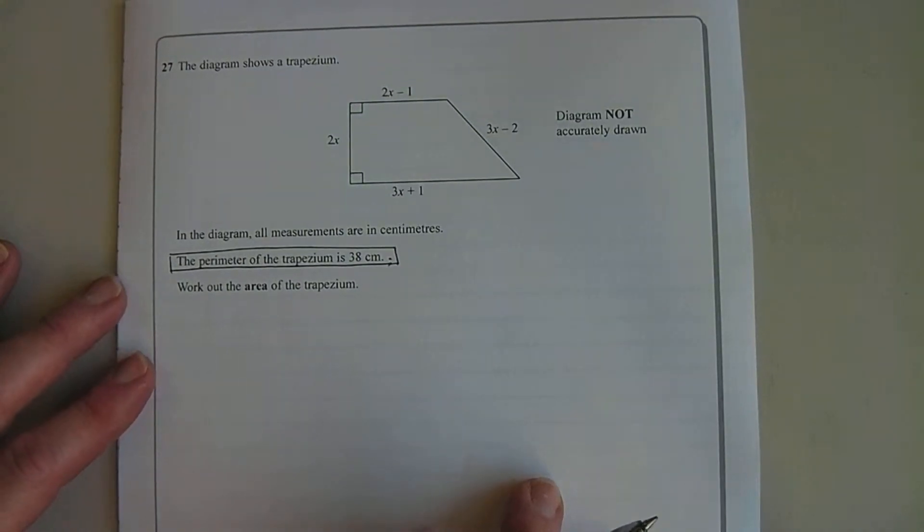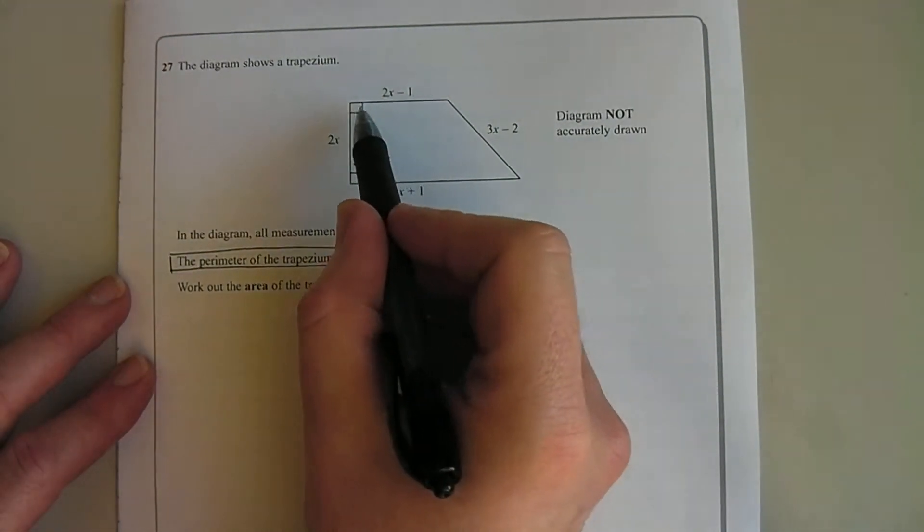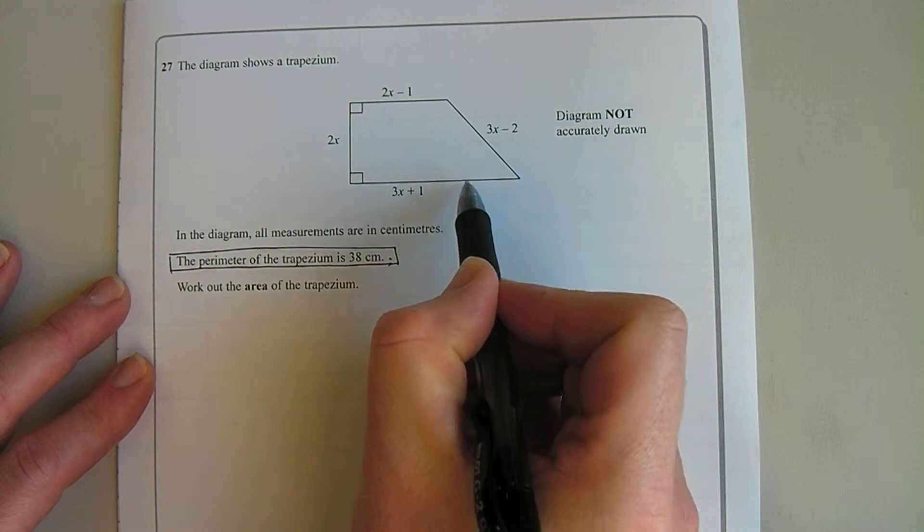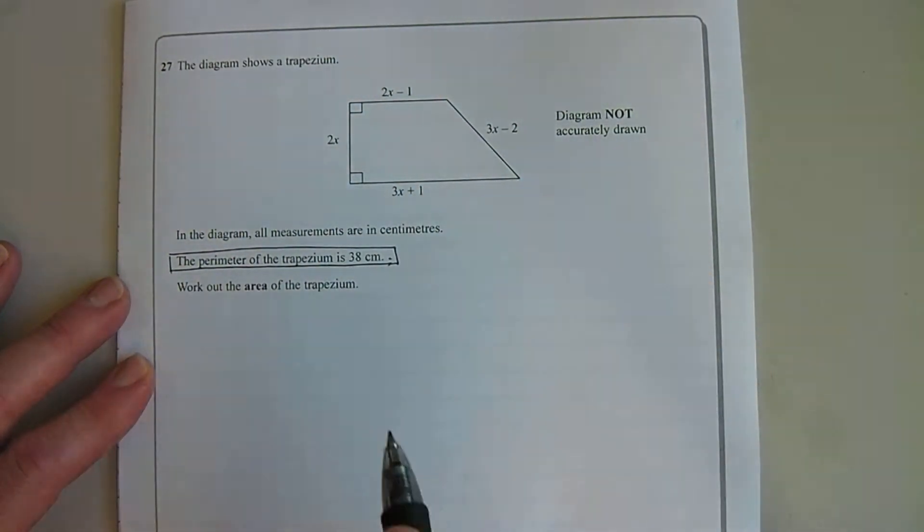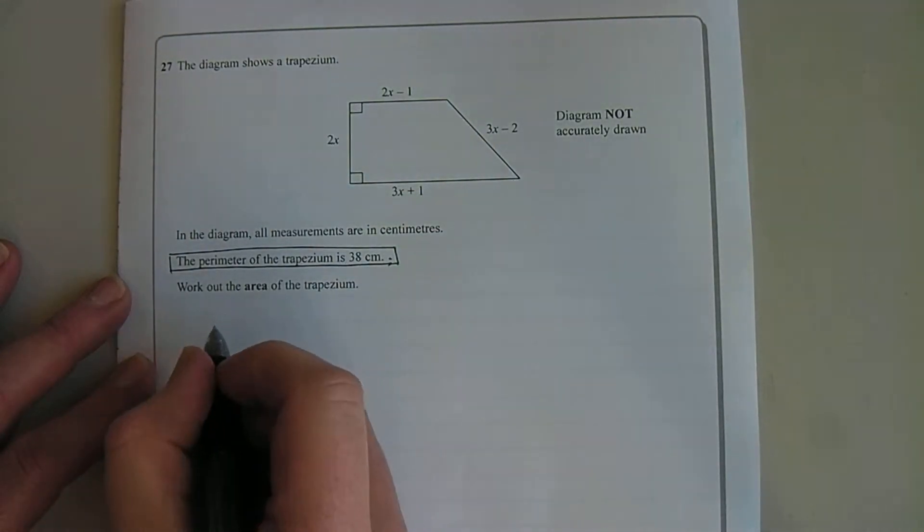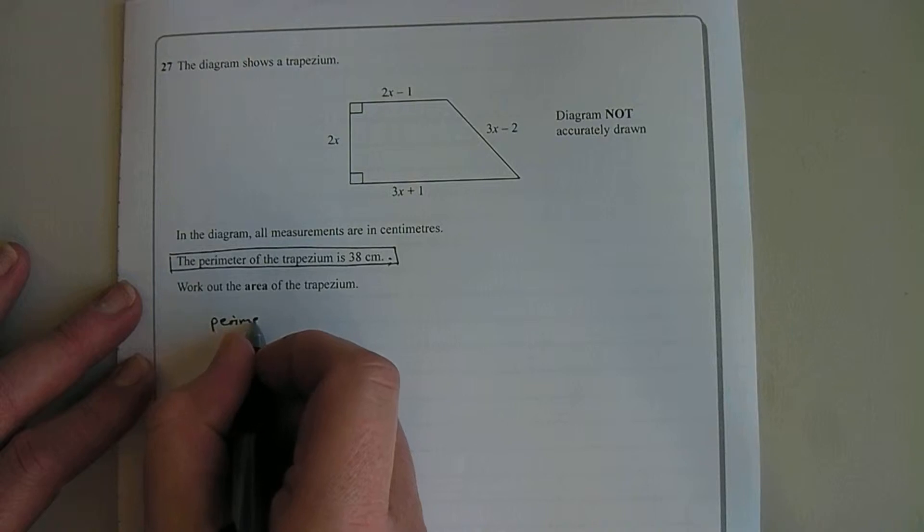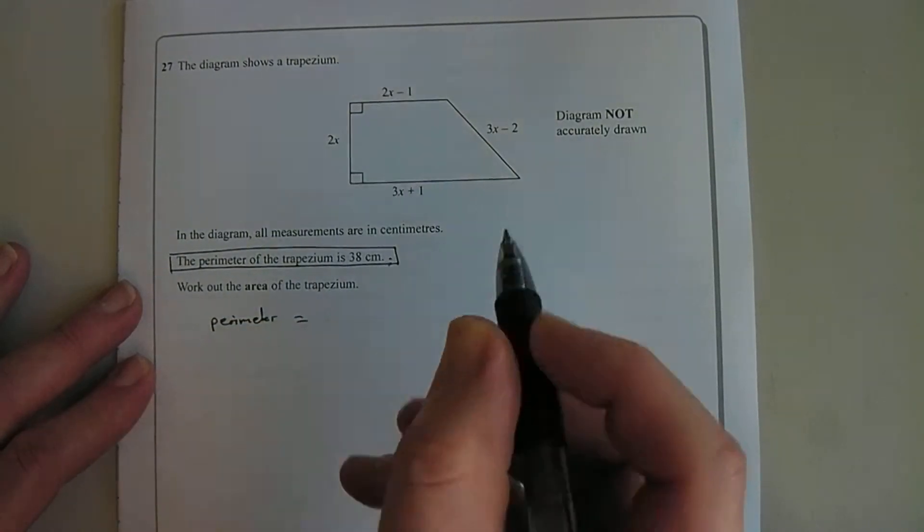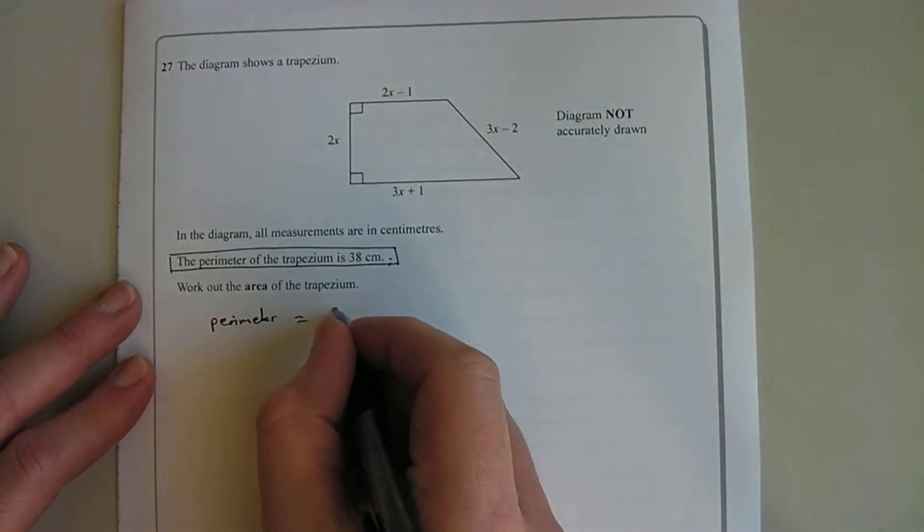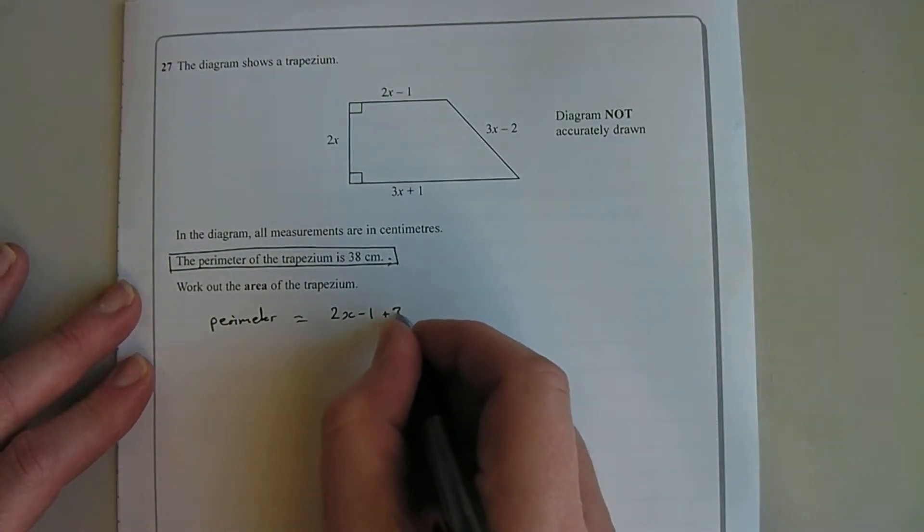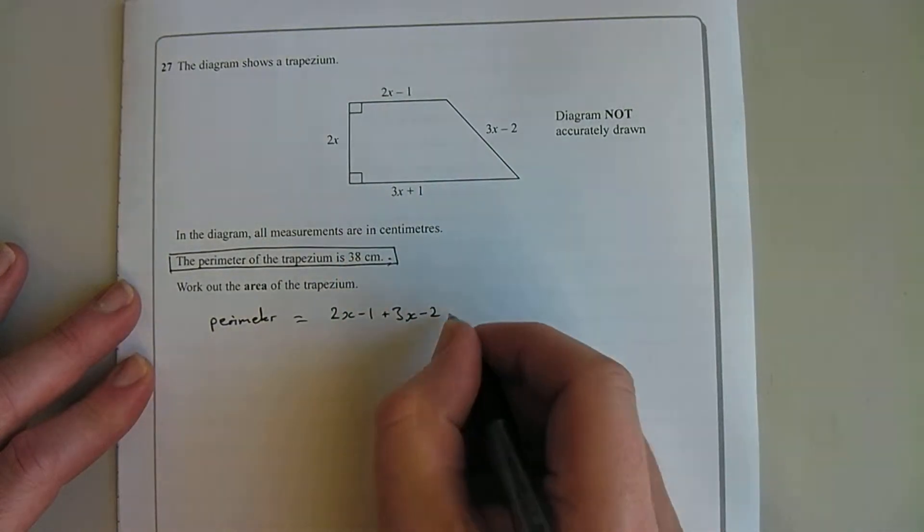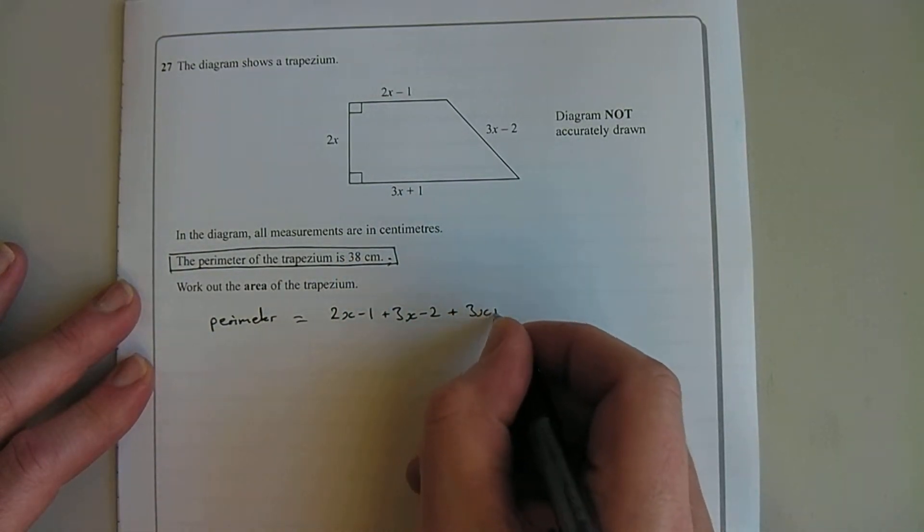So let's have a look at the perimeter. We know the perimeter is a unit of length and it's all the way around the outside of the shape, so what we need to do is write out the perimeter of the trapezium. So the perimeter equals the top length 2x-1, down the side 3x-2, along the bottom 3x+1, and up the side 2x.